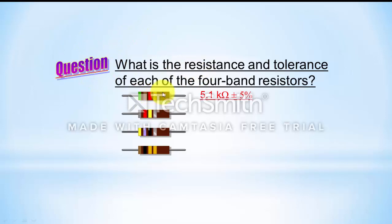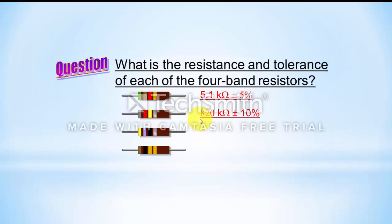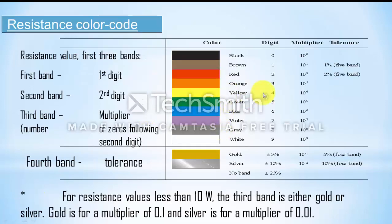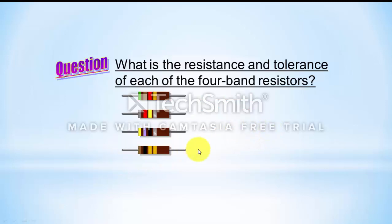For the second resistor: gray (8), red (2), yellow (multiplier 10⁴). So 82 × 10⁴ = 820 kΩ, with silver band meaning ±10% tolerance. Third resistor: yellow (4), violet (7), black (multiplier 10⁰). So 47 × 1 = 47 Ohm, silver band = ±10% tolerance. The fourth resistor is left as an exercise.